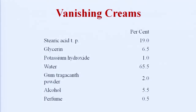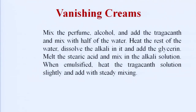The ingredients incorporated into vanishing cream formulations include stearic acid, glycerin, potassium hydroxide, water, gum tragacanth, alcohol, and perfumes. These ingredients generate a stable industrial product suitable for sale in the market. Stearic acid is the agent that vanishes, glycerin acts as a humectant, potassium hydroxide makes the soap emulsifier, and gum tragacanth maintains the consistency of the product.